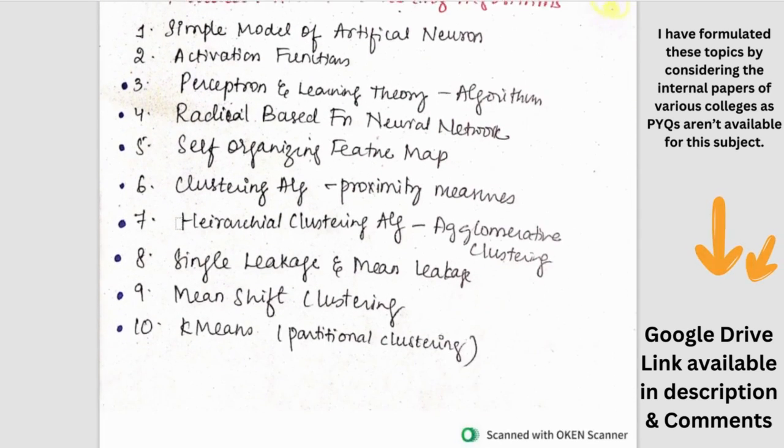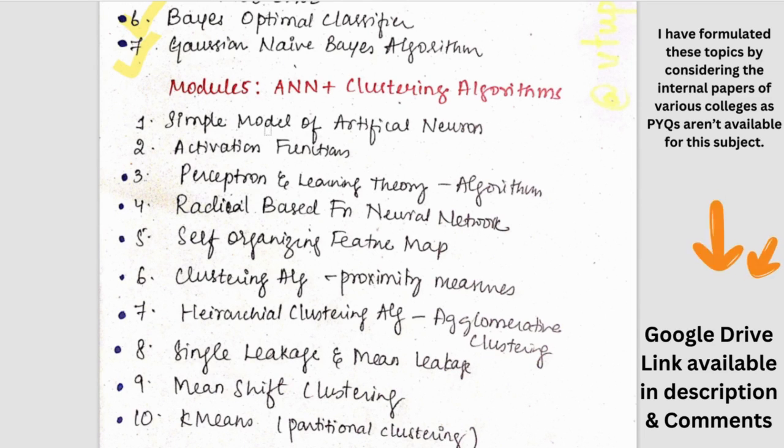Then coming to the fifth module. Fifth module we have model of artificial neurons. This is a theory topic. And then activation functions - there are nearly 9 to 10 activation functions. So that could be asked. And then we have the perceptron learning theory algorithm related to it. That could be asked - AND gate, XOR gate, NOR gate. So that will be asked.